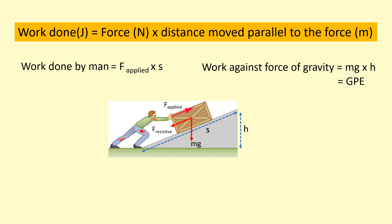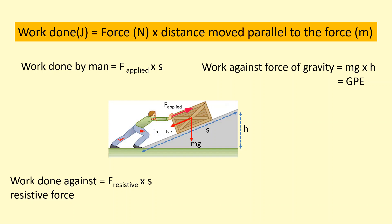Another resistive force — we can do the resistive force times the distance moved parallel to the resistive force, which is again just S, the distance parallel to the slope. Work done against resistive forces is actually just another way of saying the dissipated energy. Because if you're pushing against resistive forces like air resistance or friction, the energy is going to be transferred to the surroundings, dissipated as thermal energy.